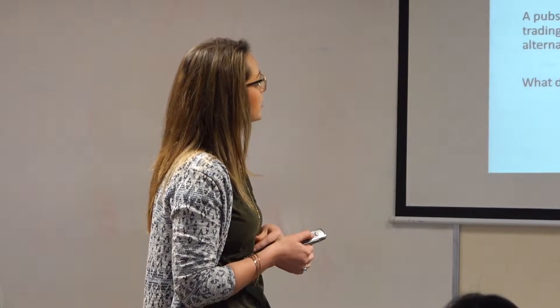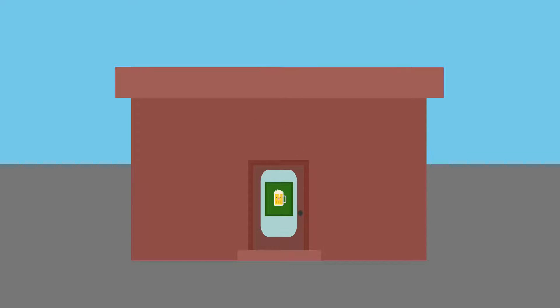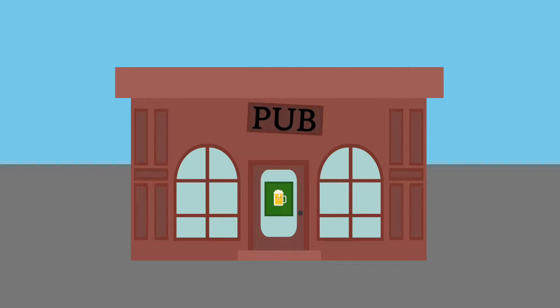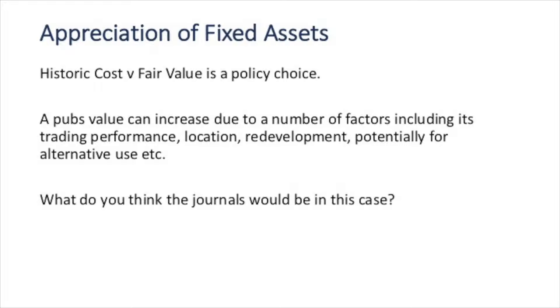Appreciation of a fixed asset is the opposite to depreciation. Your pub, for example, can also go up in value due to a number of factors: trading performance, location, redevelopment potential, and alternative use. So it doesn't always need to be depreciating. If depreciation is crediting your fixed asset, then appreciation would be debiting your fixed asset — you're increasing it — and then the credit goes to your revaluation reserve.